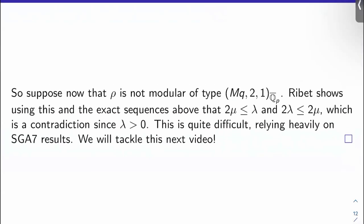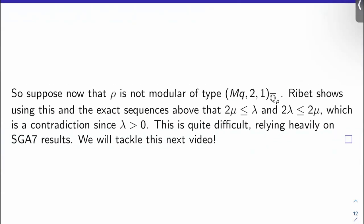All right. So the conclusion of this video is that what we're going to do next time is we're going to prove Ribet's theorem by contradiction. We're going to suppose ρ is actually not modular of type (Mq, 2, 1) over Q̄_p. We will use this assumption, the six or seven exact sequences that we have so far. I think we have six now and we'll have one again next time to show basically that 2μ ≤ λ and that 2λ ≤ 2μ, which is a contradiction because μ is a non-negative integer and λ is a strictly positive integer. This is quite difficult. We'll rely heavily on SGA chapter 9, section 11, for example, and some other results. And we'll begin to tackle that argument next video. It's actually a pretty cool argument. So I'll see you then and thanks for watching.